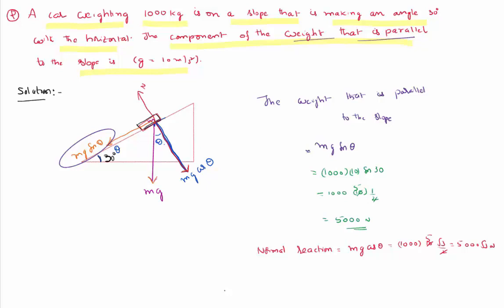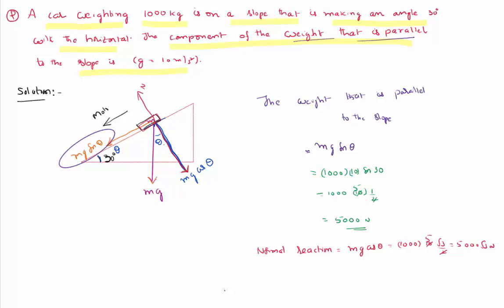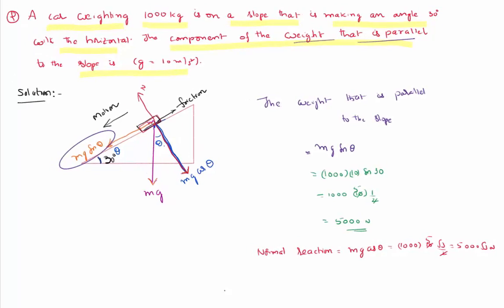I also want to make you aware that if the body is sliding down because of mg sin theta and the surface is rough, friction comes into action. Friction acts against the relative motion — since relative motion is in the downward direction, the frictional force acts in the upward direction. The frictional force equals mu times the normal reaction, where mu is given in the problem and the normal reaction is mg cos theta. This maximum possible frictional force is called limiting friction.